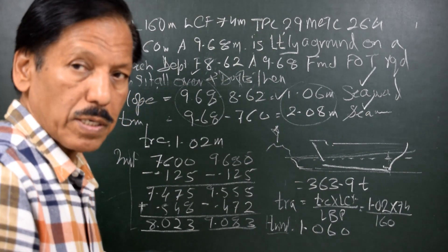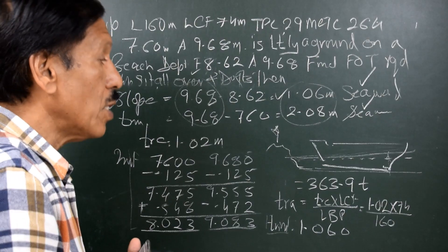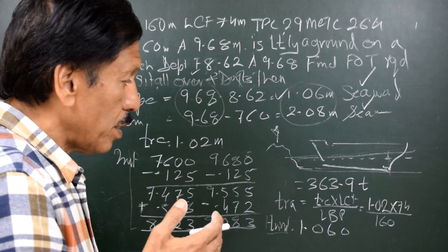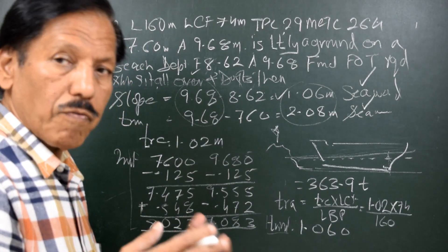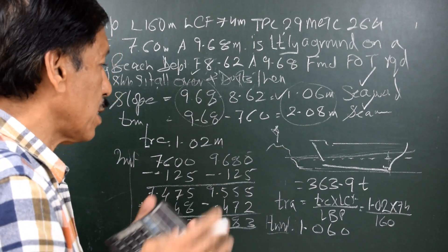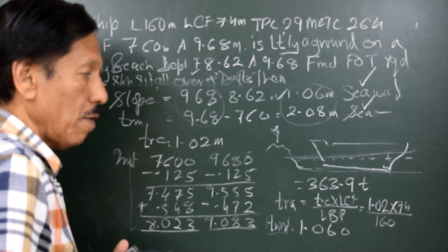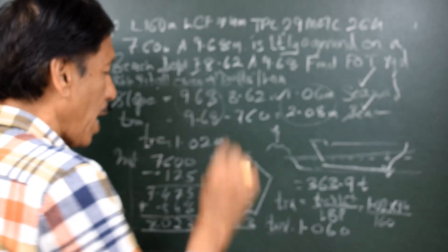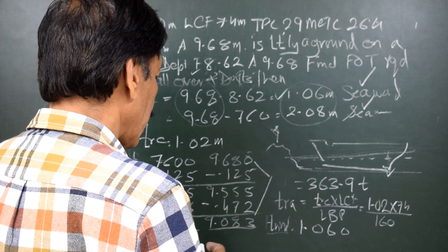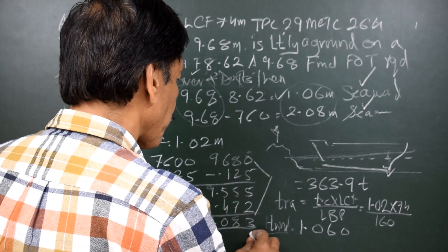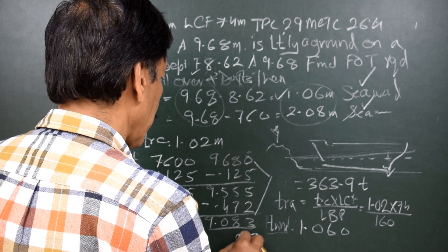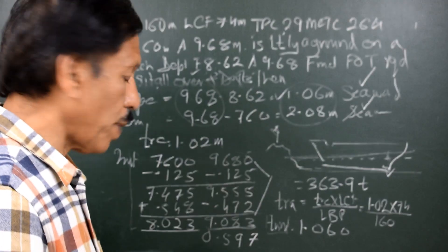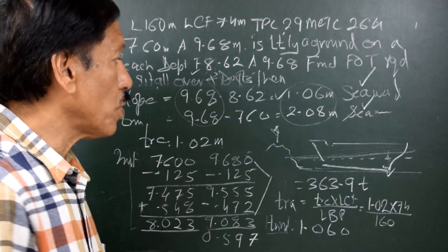Now, if we have to find out how much is the fall of water required for this, how much fall of water should be there so that the ship trims by 1.02 meters or the ship sits all over, there is a standard truth which is applicable in any situation and that golden rule is: change of the draft at point of contact gives you rise or fall of tide. So, point of contact is aft and let us see what is the change of draft aft. Change of draft aft is 9.680 minus 9.083, so that is equal to 0.597 meters.